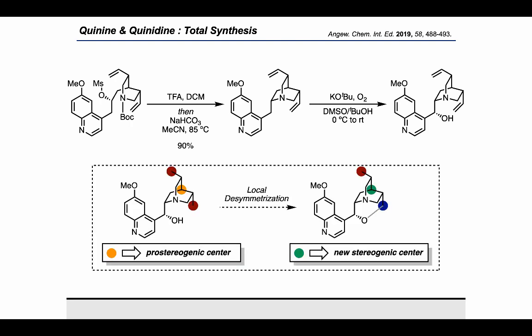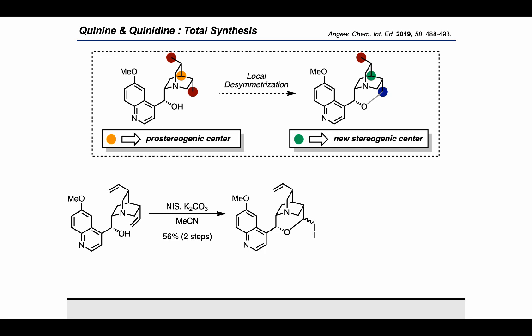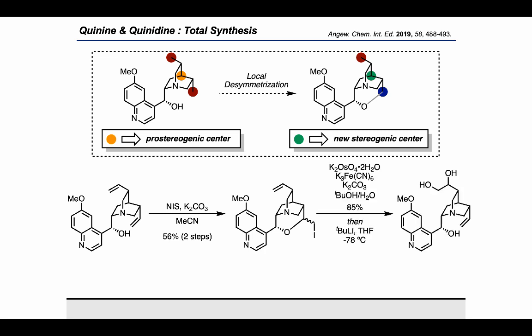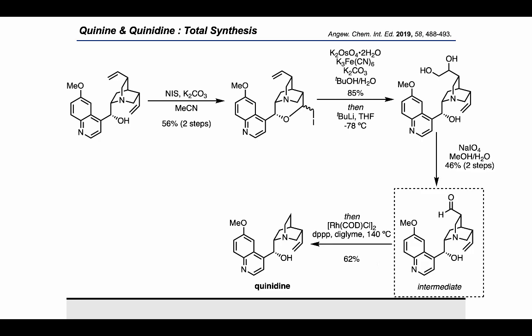Stereoselective oxygenation with potassium tert-butoxide and oxygen led to a product where the authors again aimed to use a local desymmetrization to remove one of the diastereotopic vinyl groups. They wanted the secondary alcohol to cyclize onto one of the diastereotopic vinyl groups—not only to render them chemically differentiated, but also to set the stereochemistry of the prostereogenic center marked in orange. They executed this by performing an iodocyclization with iodoxycinamide, followed by dihydroxylation of the alkene on top and treatment with tert-butyllithium to regenerate the terminal alkene on the bottom, proceeding through an intermediate bearing a diol on the top face and a terminal iodide on the bottom face of the quinuclidine. Finally, periodate cleavage of the 1,2-diol on the top side of the bicycle resulted in formation of the aldehyde, which was again subjected to rhodium-catalyzed deformylation to arrive at quinidine.